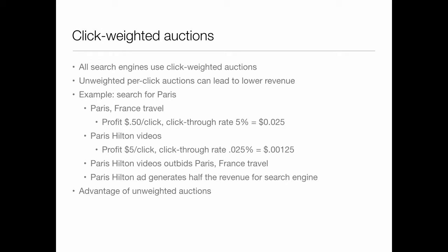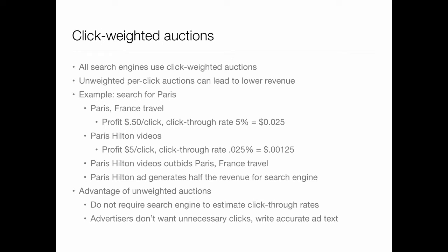The advantage of unweighted auctions is that they do not require a search engine to estimate click-through rates. Google spent a lot of time doing this, and everybody trying to game click-through rates spends time doing this, so it is a bit of a mess. Advertisers don't want unnecessary clicks — they have to write accurate ad text to avoid that. You might get better advertising behavior depending on which format you use. Thus far, click weights seem to be the better way to go.